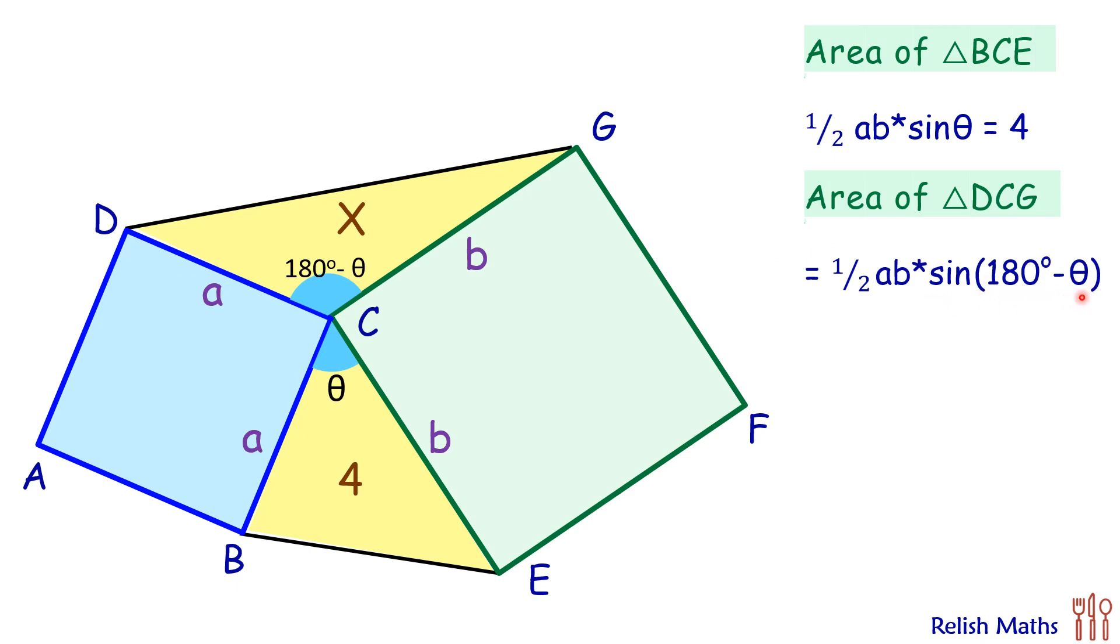ab sin θ is 4, so the area of triangle DCG is 4 cm². That's an interesting outcome—these squares are of different sizes and are turned at different angles, but the triangles which are being formed